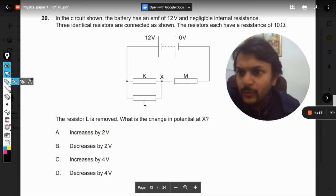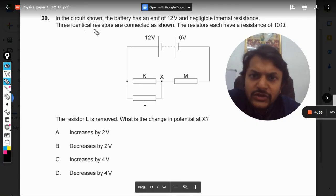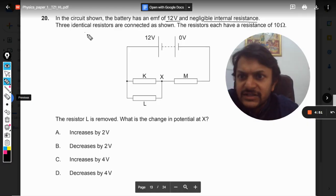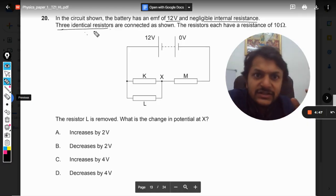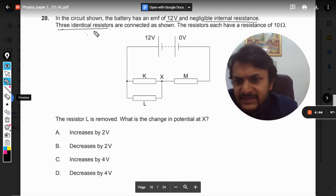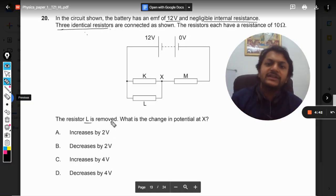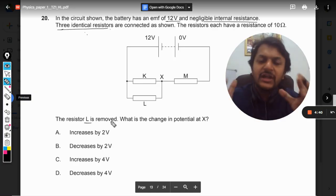Okay dear students, let us see what is there in this question. In this circuit shown, the battery has the EMF of 12 volt and negligible internal resistance. Three identical resistors are connected. The resistors each have the resistance of 10 ohm. The resistor L is removed and what is the change in the potential at X?